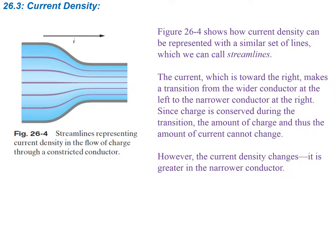This figure shows how current density can be represented with a similar set of lines, which we can call streamlines — we might have seen this before with water flow. The current makes a transition from the wider conductor on the left to the narrower conductor on the right. Since charge must be conserved, the same amount of charge in equals the charge out, so the amount of current cannot change. However, the current density changes and is greater in the narrower conductor. The lines are far apart in the wide section, but as you decrease the area the same charge flows through, so the lines become much closer and current density is greater.